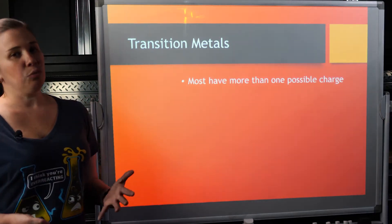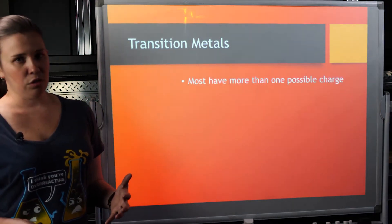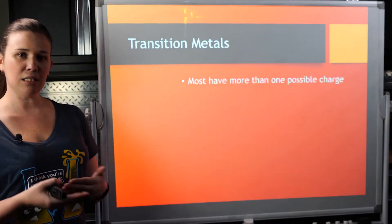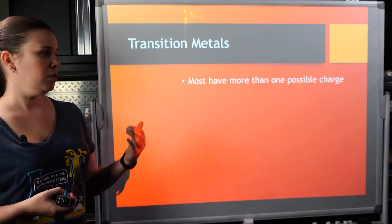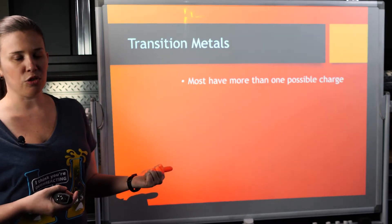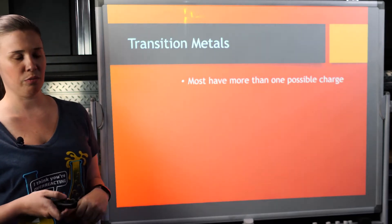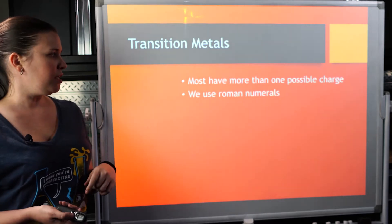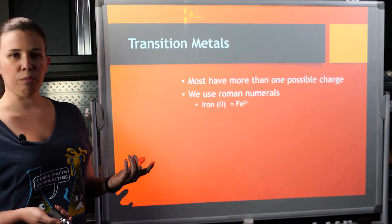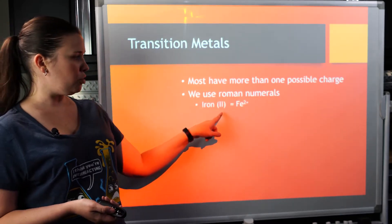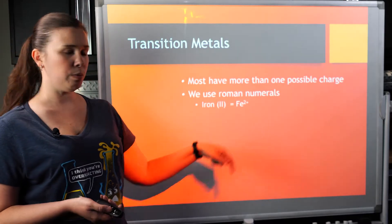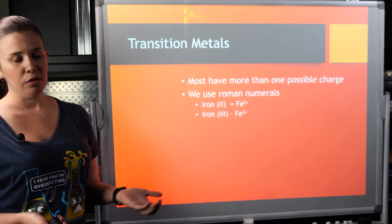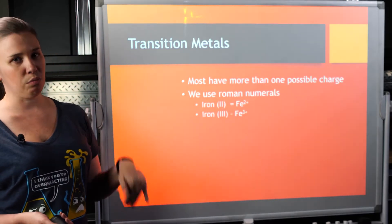Here's one section of the periodic table where you do have to worry about the name of the cation, and that is our transition metals. Transition metals don't have one set charge. We learned when we made formula units that the charge dictates the subscript — but how do we know what the charge is on a transition metal? Because they have multiple options. The idea is that you use Roman numerals. So if you wrote iron II, that would be the 2+ ion, whereas iron III would be the 3+ ion.